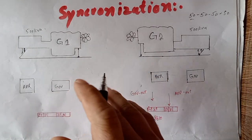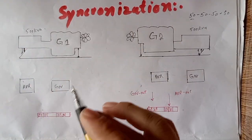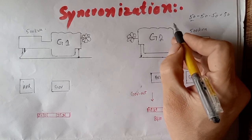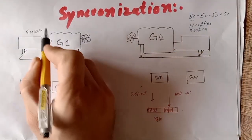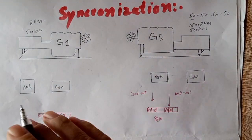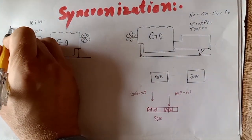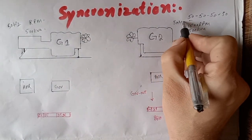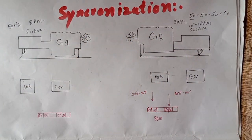Another concept: you need to operate two generators in synchronization with the same speed. For example, if this generator has 1500 RPM, you must use another generator with 1500 RPM as well. When RPM is the same, frequency is also the same — for example, both generators at 50 Hz.